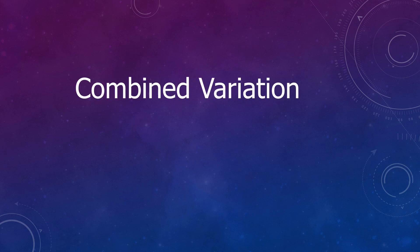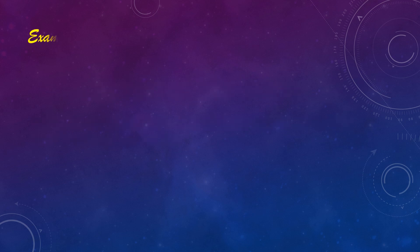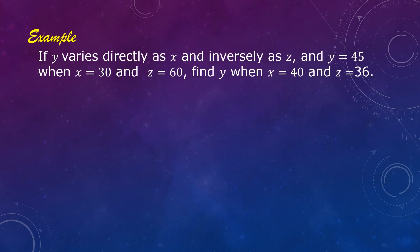Combined variation is a combination of direct and inverse variation. For example, if y varies directly as x and inversely as z, and y is equal to 45 when x is equal to 30 and z is equal to 60, find y when x is equal to 40 and z is equal to 36.